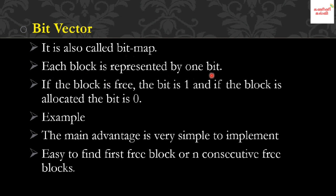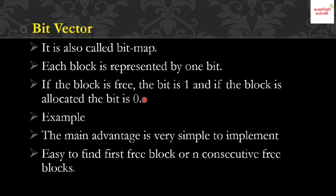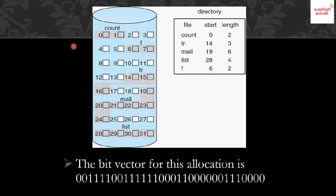Each block is represented by one bit. The hard disk is divided into blocks. If the bit is 1, the block is free. If the block is allocated to a file, the value is 0. So a value of 1 means free and a value of 0 means allocated.